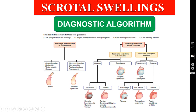If the swelling is opaque, you have to look for special characteristics. If it is not tender, we are dealing with tumour testis — that is carcinoma of the testis. Tuberculosis epididymis is also not tender. If it is very tender, we are dealing with acute epididymo-orchitis. This diagnostic algorithm is very useful to clinch the correct diagnosis.